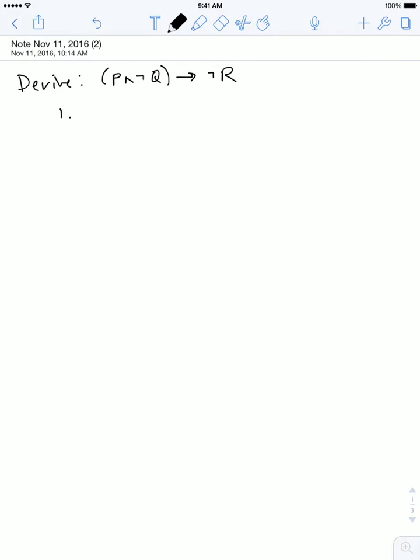And we're going to try to derive this from two primary assumptions. The first one is going to be if not Q, then A. And the second one is going to be A, then not P. These are our primary assumptions.